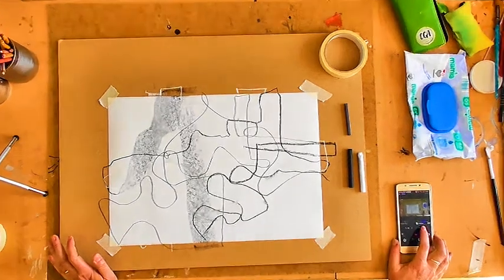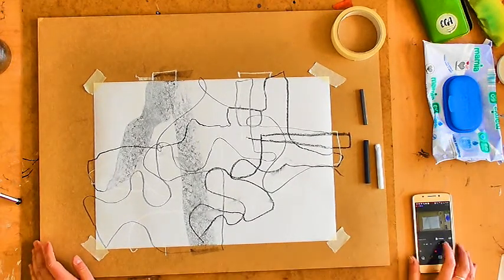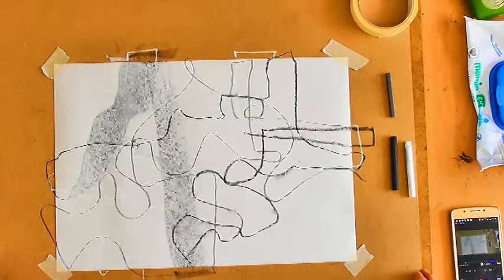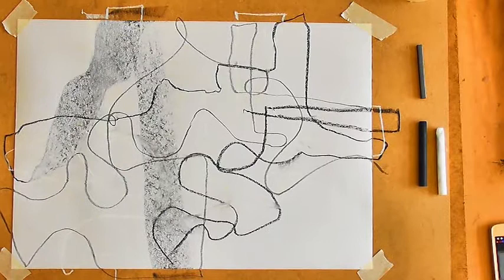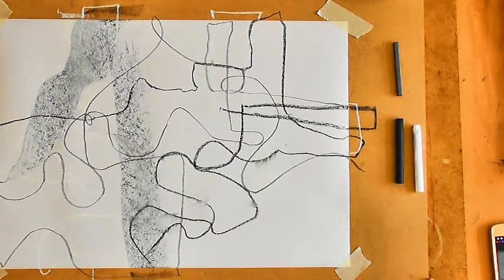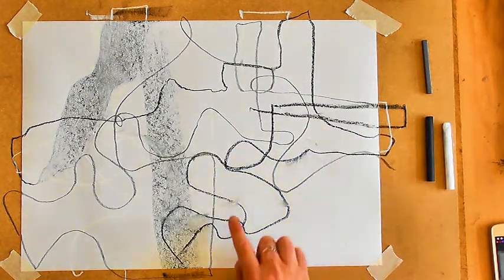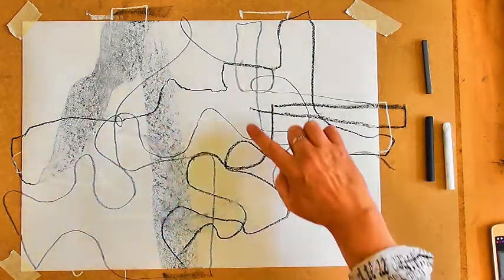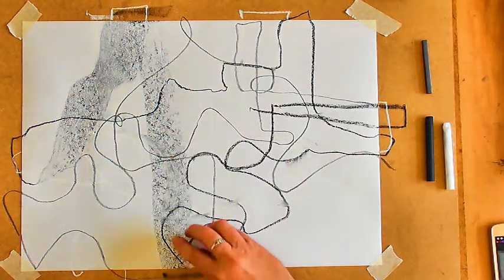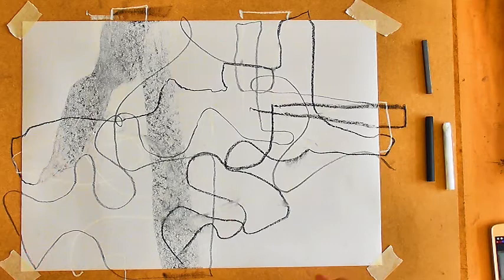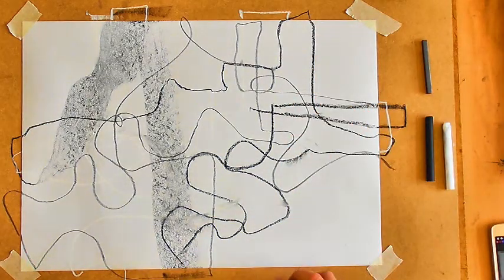I'm going to zoom in a little bit so you can see what I've done here. As you can see, I've gone off the paper quite a bit. I've got lots of intersecting lines and some shaded areas where I've turned the graphite stick and the charcoal.